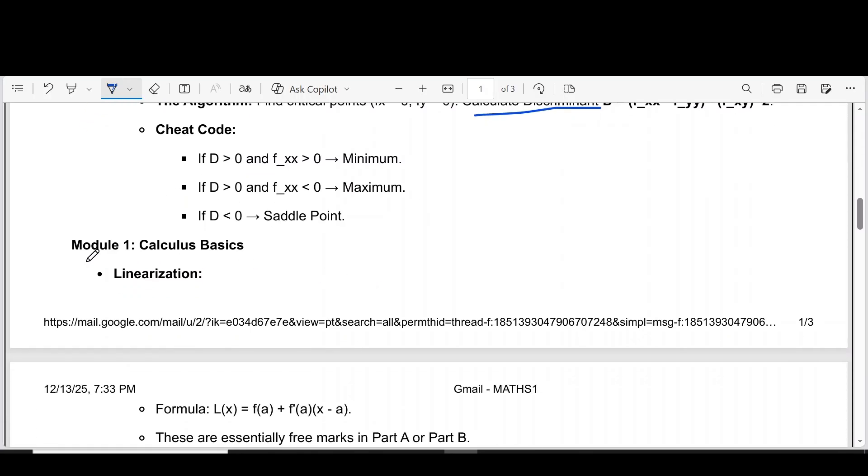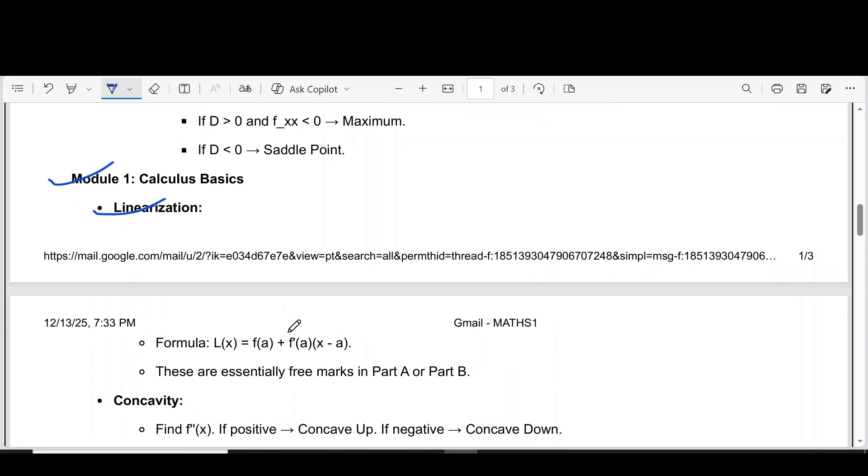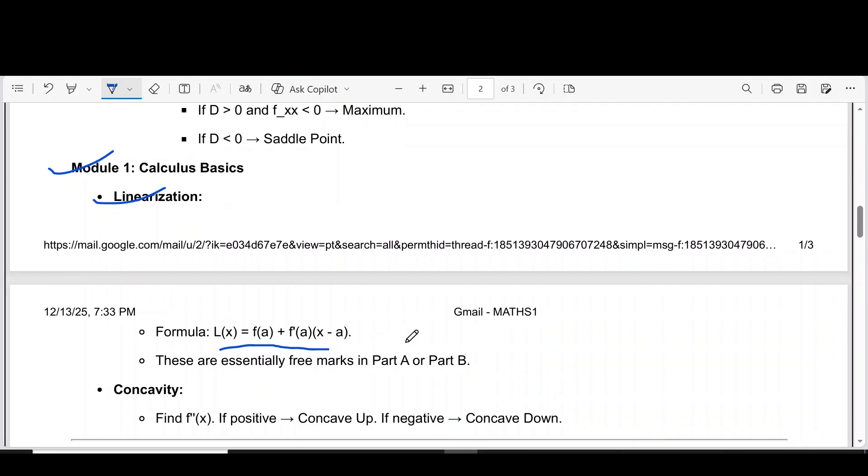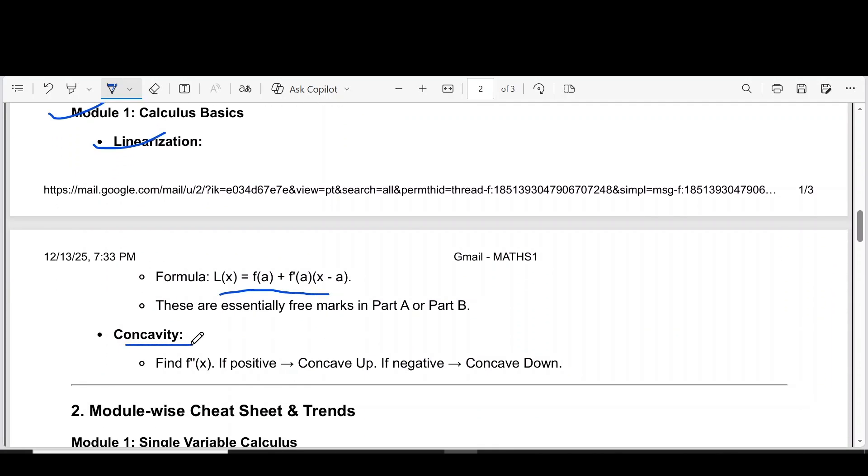Now we can see the module 1 important question, which is linearization. Formula is L of x equal to f of a plus f dash of a into x minus a. Then concavity, find f double dash of x if positive, concave up, if negative, concave down.